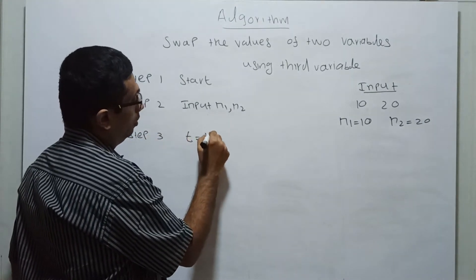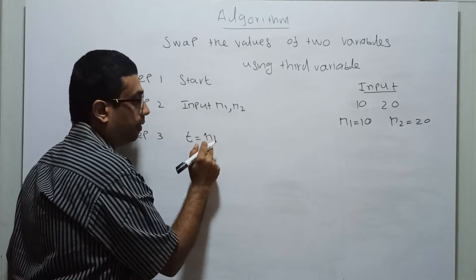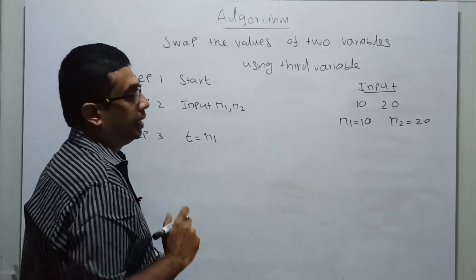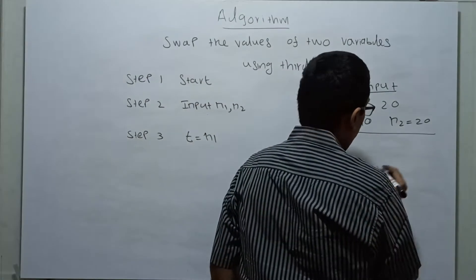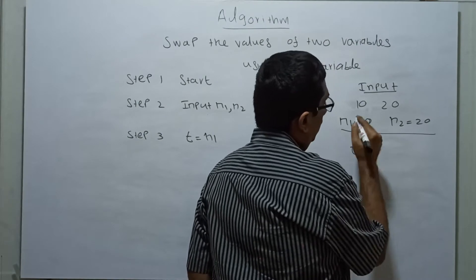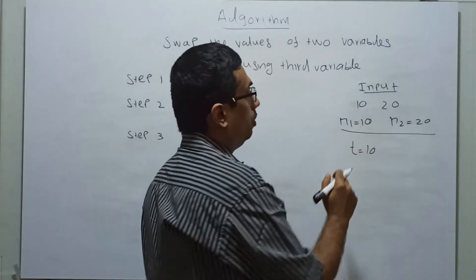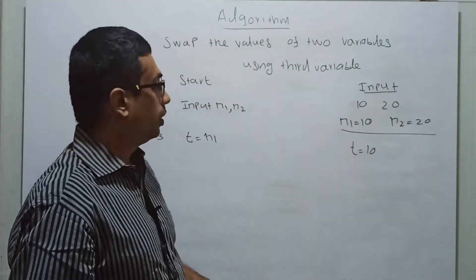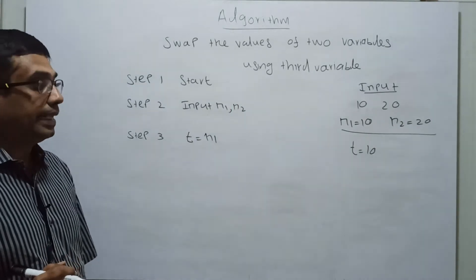Step 3: t = n1. I am assigning the value of n1 to t, so t becomes 10.